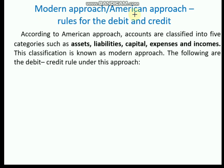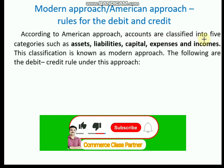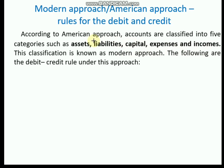Now we can study about the rules of debit and credit as per the modern approach or American approach. This is the new way of making journal entries. According to the American approach, accounts are classified into five categories: assets, liabilities, capital, expenses, and incomes. We have to know the items which are included in each of these sections.